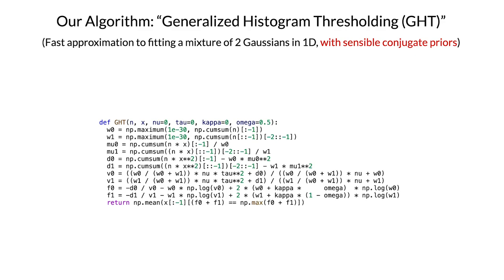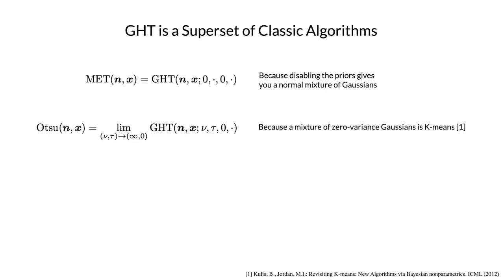I end up calling this algorithm generalized histogram thresholding, or GHT, because it generalizes those classic algorithms that I described earlier. If you disable the priors and mixture of Gaussians, it reduces to MET. If you impose a very strong conjugate prior on the variances to drive the posterior variances down to zero, then it exactly reduces to Otsu's method, just because a mixture of Gaussians with zero variance is equivalent to K-means.